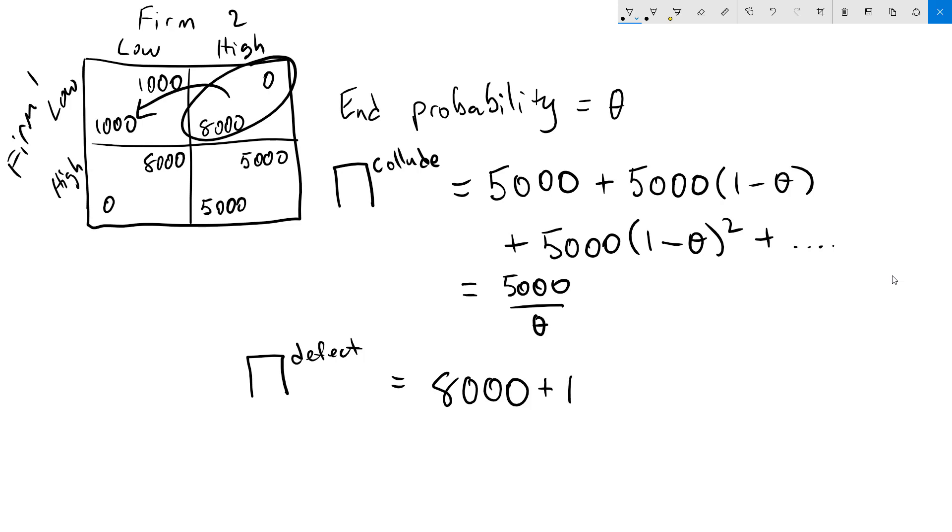If the game lasts for the next period, then the defecting firm is going to make a payoff of $1,000 with a probability of 1 minus theta. Same thing for the next period as well. If we ever make it there, which happens with the probability of 1 minus theta squared, and so on beyond that. This is also a geometric series, and using the formula we get 8,000 plus 1,000 times 1 minus theta over theta.